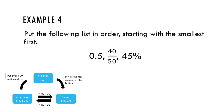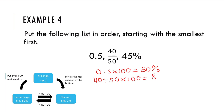Example four: put the following list in order starting with the smallest first. This is difficult to see which is biggest and smallest because one's a decimal, one's a fraction, and the other is a percentage. What we'd like to do is put them all into one form. Fractions tend to be the hardest to compare, so I'm going to put them all in percentage form. To take my decimal to a percentage I'll multiply by 100, which gives me 50%. To put my fraction to a percentage I divide the top by the bottom then multiply by 100, giving me 80%. And I've already got 45%. So starting with the smallest: 45%, then 0.5, and our largest is 4 over 5.